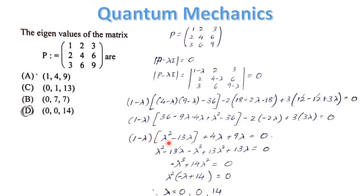Simplifying further: (1−λ)(λ²−13λ) + 4λ + 9λ = 0. This gives λ²(−λ + 14) = 0, so λ² · (14 − λ) = 0. Therefore, the values of λ are 0, 0, and 14.